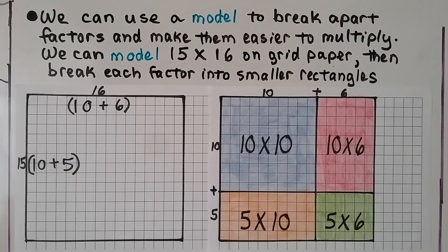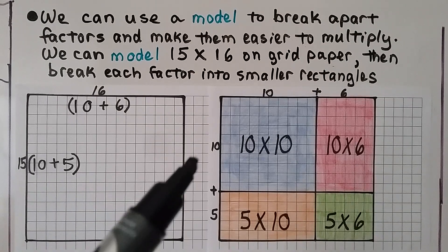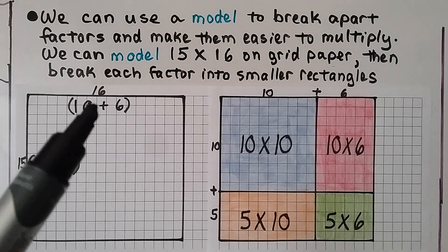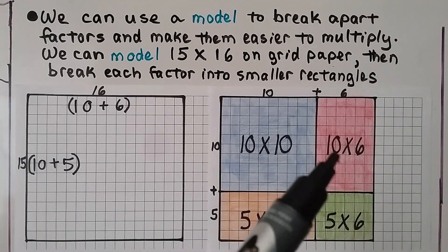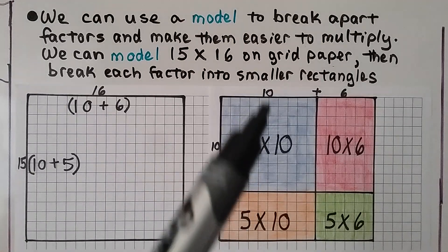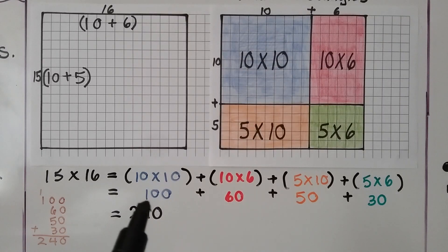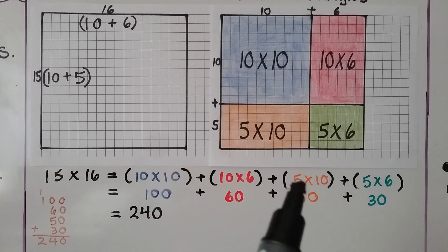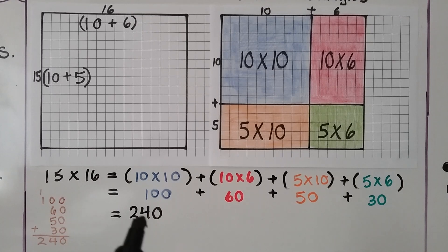We can use a model to break apart factors and make them easier to multiply. We can model 15 times 16 on grid paper, then break apart each factor into smaller rectangles. We break the 15 into 10 plus 5, and the 16 into 10 plus 6. Now we have 10 times 10, 10 times 6, 5 times 10, and 5 times 6 as our partial products. 10 times 10 is 100, 10 times 6 is 60, 5 times 10 is 50, and 5 times 6 is 30. We add our partial products and get 240, so 15 times 16 is 240.